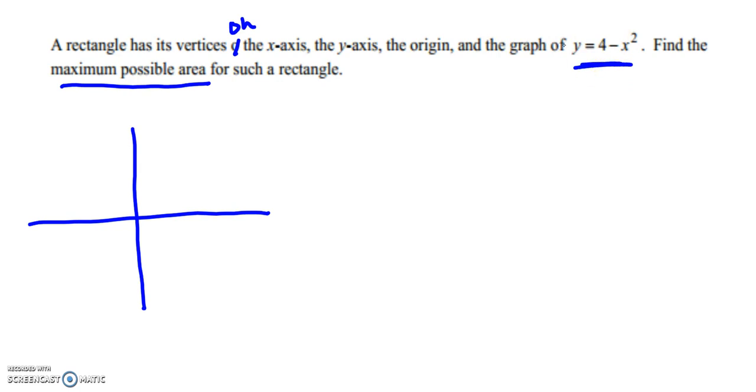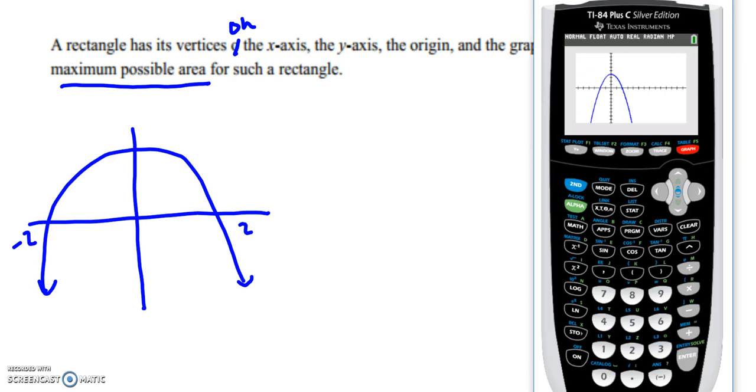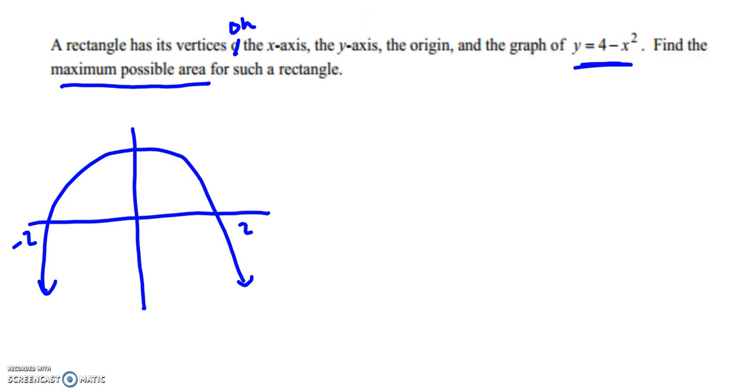It says a rectangle has vertices on the x-axis, the y-axis, the origin, and the graph of 4 minus x squared. Well, let's first talk about what this would be. Where would this 4 minus x squared be? Well, we can pull up our calculator and graph this. So go ahead and pause the video, please take a moment and graph it. Hopefully you know it was a parabola because you had x squared in there. I plugged that in my calculator and you can see it has x-intercepts at 2 and negative 2.